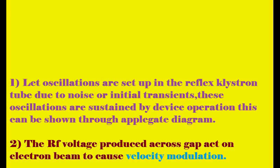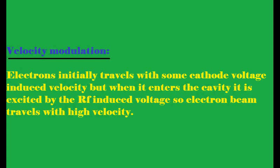The electron moving through the cavity goes with high velocity because of the RF-induced voltage — this is called velocity modulation. Initially electrons travel with some velocity due to the cathode voltage, but when they enter the cavity they are further excited by the RF-induced voltage, causing the electron beam to travel with higher velocity.